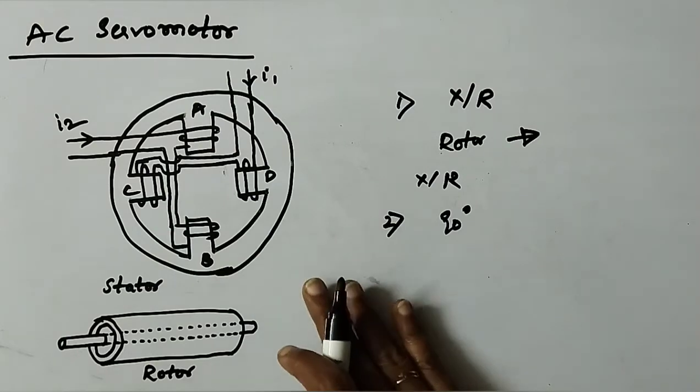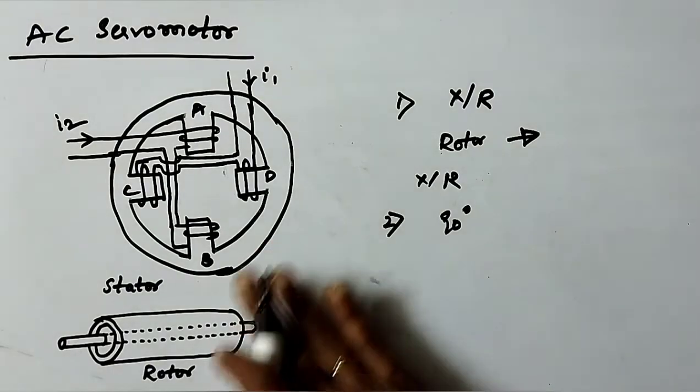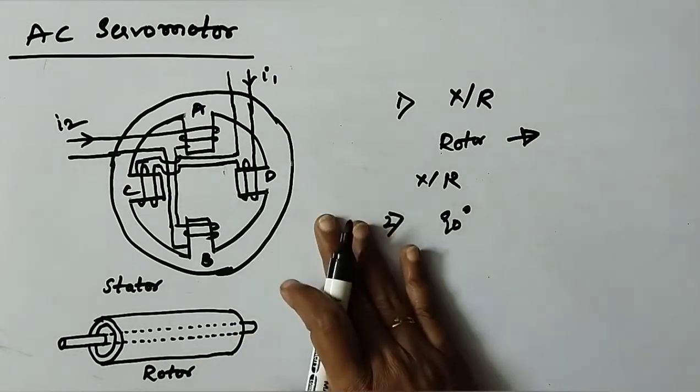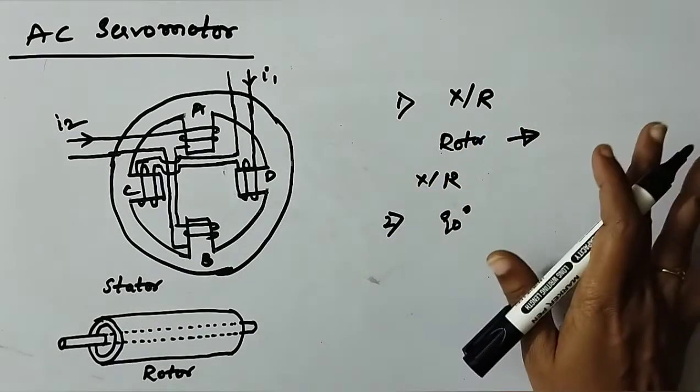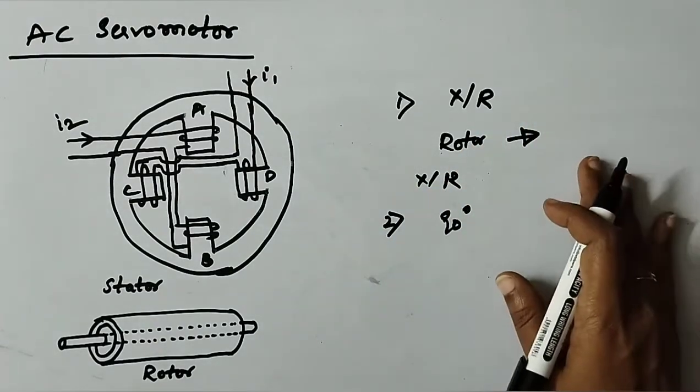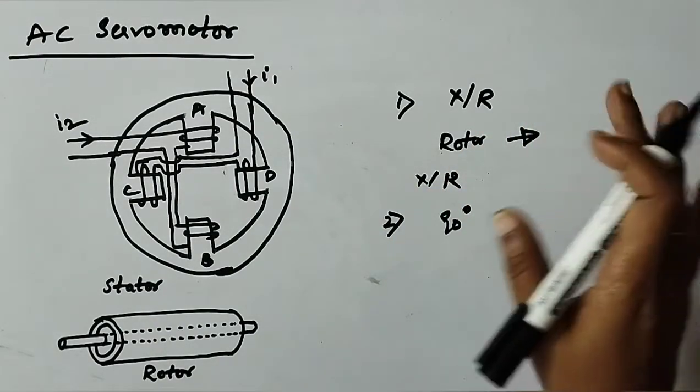Now, we will see AC servo motor. This is the stator and this is the rotor. AC servo motor is basically a two-phase induction motor except for certain special design features.